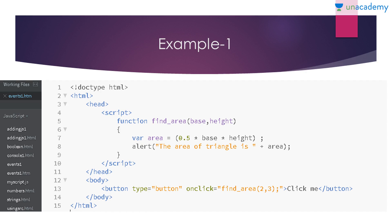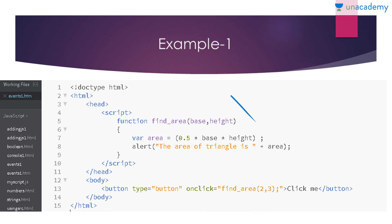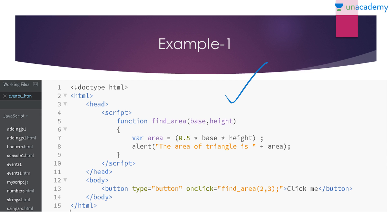Here is working example number one. In the script tag in my head section I have used a function. I want the function to calculate the area of a triangle. In the body section I have a button with type='button' and an onclick attribute — whenever someone clicks that button, this function will be called. The function name is 'findArea' and I have given two parameters: 'base' and 'height', because the formula for the area of a triangle is half times base times height.